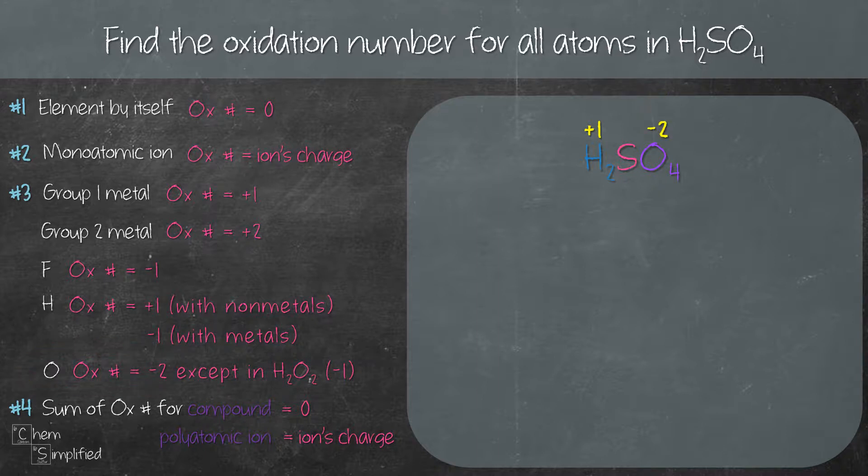Now that we've found the oxidation numbers for H and O, we can easily find the oxidation number of sulfur. The easiest way is to set up a simple equation using X to represent the oxidation number of S. According to rule number four, the sum of oxidation numbers for a compound equals zero.